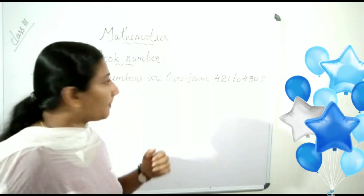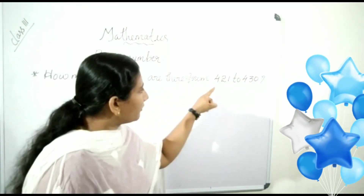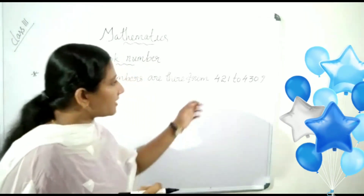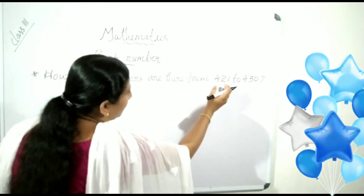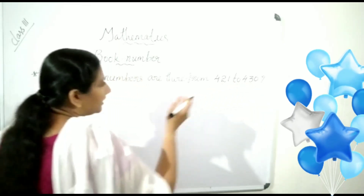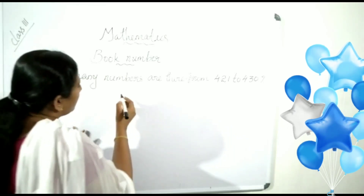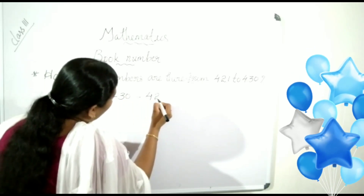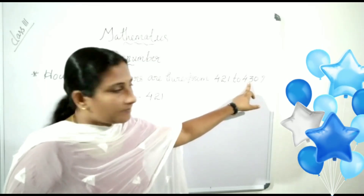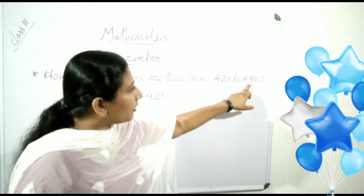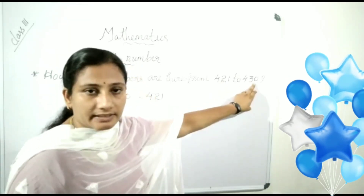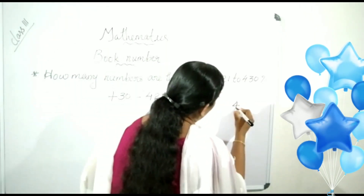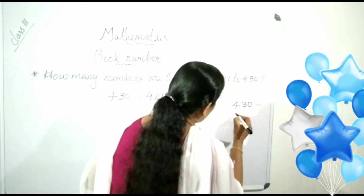Look at the next question. How many numbers are there from 421 to 430? What was the first step? Here, now we want to find the numbers from 421 to 430. How many numbers are there? So first, let us subtract 430 minus 421. Here, the big number is 430. We want to subtract 421 from 430.